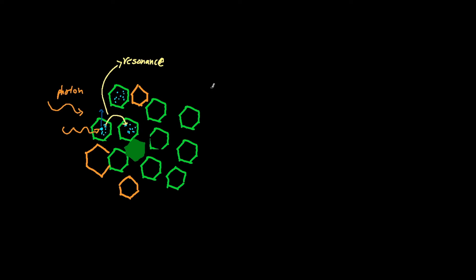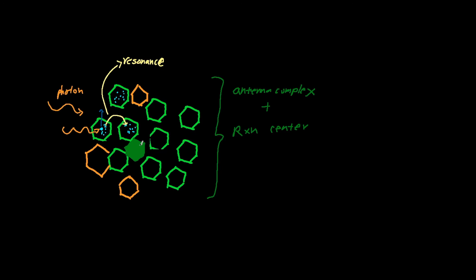This chlorophyll, carotenoids, electrons, and certain special proteins all make up the antenna complex, as well as the reaction center. The reaction center, seen in the middle of this antenna complex, is this darker green shaded chlorophyll — a specialized chlorophyll molecule that acts as an electron acceptor.